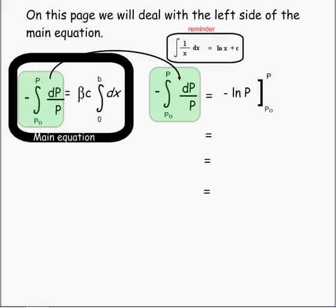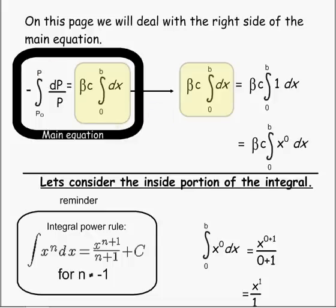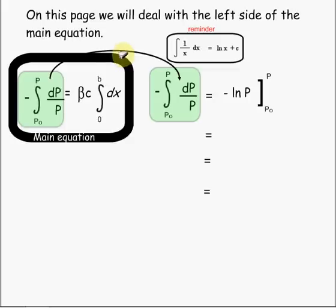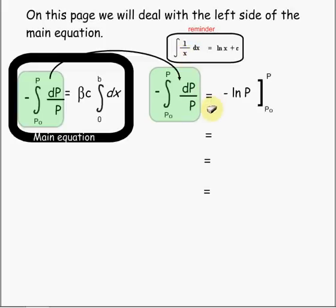That finishes the right side of the main equation. Now let's work with the left side. If we are integrating 1 over x dx, that is equal to the natural log of x plus C. So here we're integrating from P-naught to P, the dp over P — it's like we have 1 over P, like 1 over x — so we're going to use the natural log of P. We have to remember there's a negative in front of our integral, so we bring our negative with us, over the range from P-naught to P.